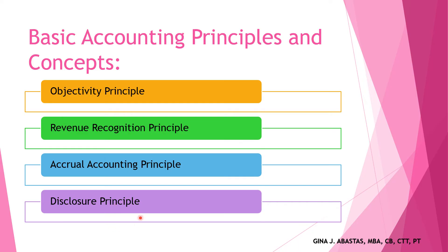Next, we have the disclosure principle — all relevant and material information should be reported. Companies should disclose all relevant information to interested users. Another important principle is the cost principle: accounts should be recorded initially at cost. For example, when a company purchases a laptop, it should be recorded at the price it was purchased.